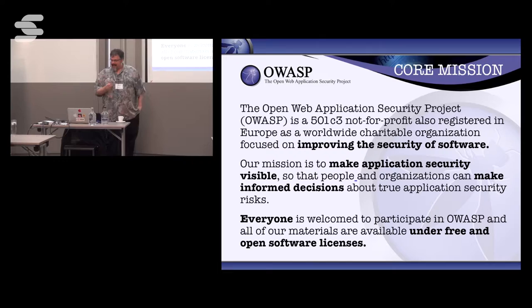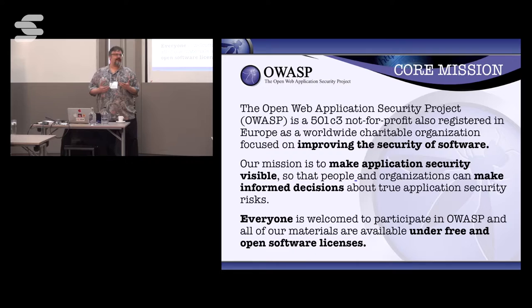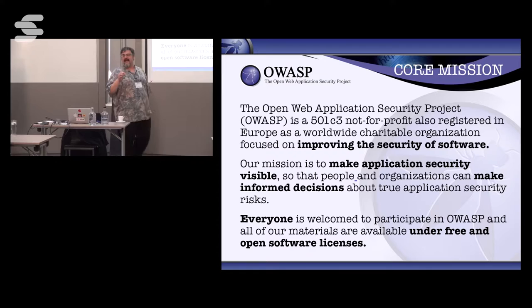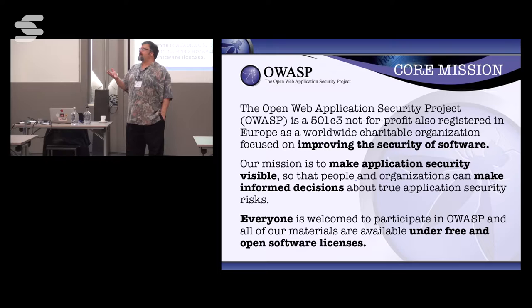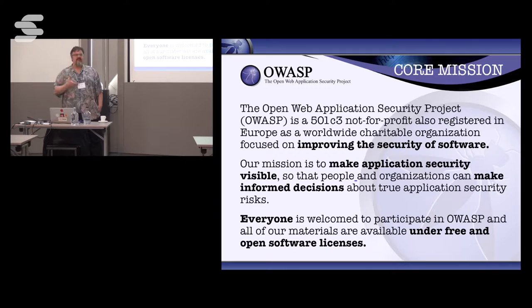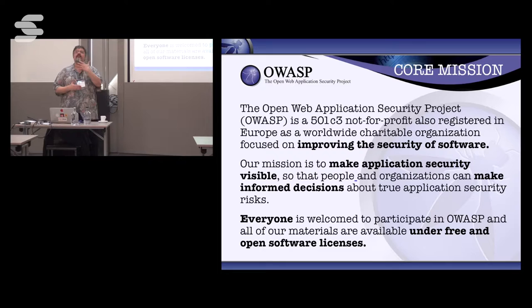OWASP is a 501c3, a not-for-profit charitable organization with an entity in Belgium as well. Our mission is to make application security topics visible so people and organizations can make informed decisions about application security. This project is the OWASP Top 10 Proactive Controls — ten categories we think you as a developer should focus on. This introduction brings basic awareness to application security; it's not the end, it's the beginning. Read this document, go through this presentation once, and then discard it — we'll point to more detailed references for further study.